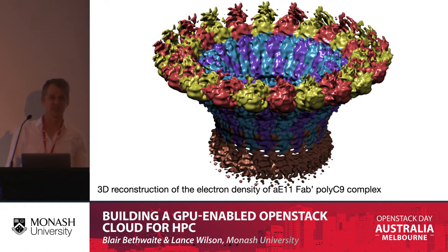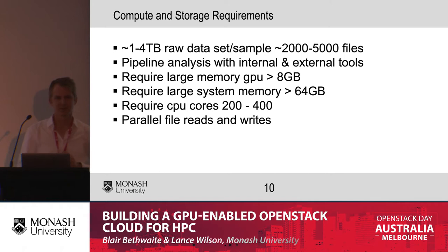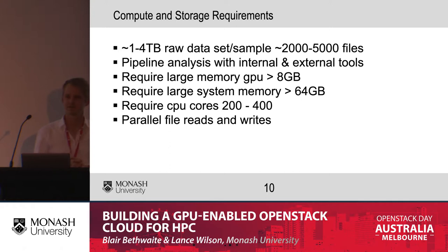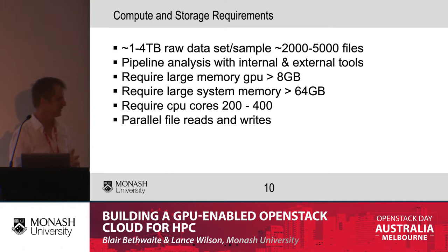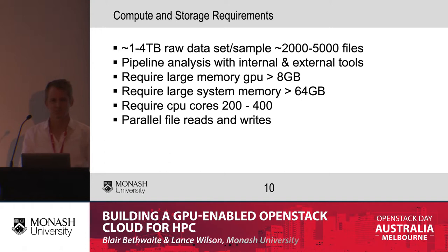It's a reasonably annoying problem computationally. You have about 5,000 files, one to four terabytes, which really smashes your file system. It is a pipeline analysis with lots and lots of steps — going back and forth with different compute requirements for every step, about 128 steps. You need monster GPUs, you need a lot of memory — the last job needed over 240 GB to process. Lots of compute cores are required, and if you have a parallel file system it absolutely smashes it — one job will take all of the bandwidth.